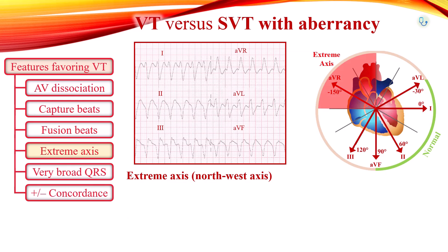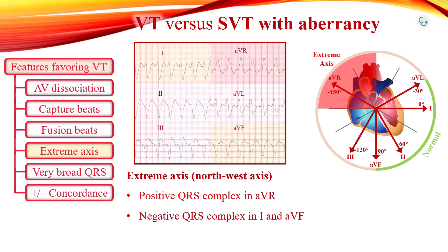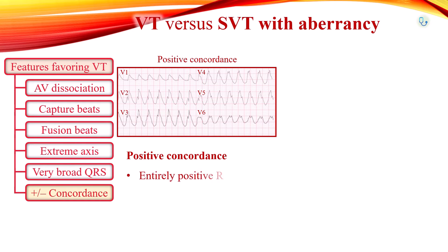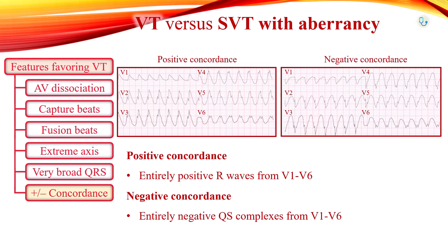Extreme axis deviation, or north-west axis, with QRS positive in lead AVR and negative in leads I and AVF, favors ventricular tachycardia. Very broad QRS complexes more than 140 ms are usually seen with ventricular tachycardia. Positive concordance can be seen as entirely positive R waves in leads V1 to V6. Negative concordance can be seen as entirely negative QS complexes in leads V1 to V6.